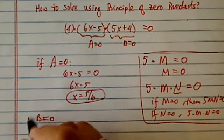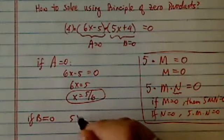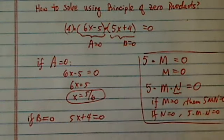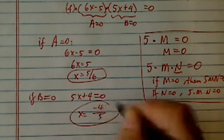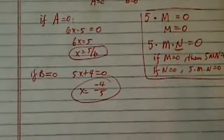If we said B equals zero, then we have five X plus four equals zero. Then X is equal to minus four over five. That's the answer.